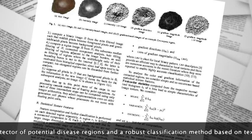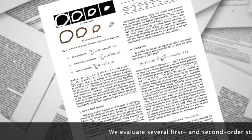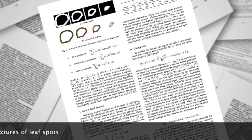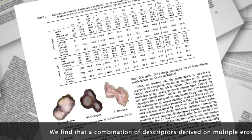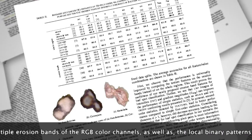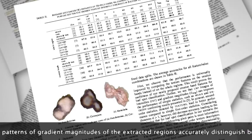We evaluate several first and second order statistical features for classifying textures of leaf spots. We find that a combination of descriptors derived on multiple erosion bands of the RGB color channels, as well as the local binary patterns of gradient magnitude of the extracted regions, accurately distinguish between symptoms caused by five diseases.